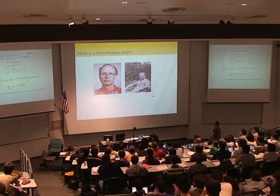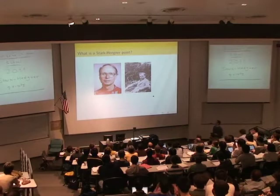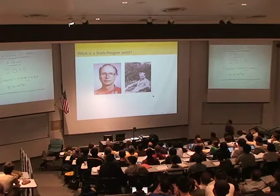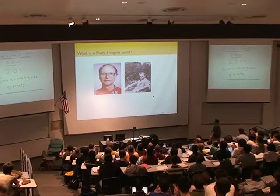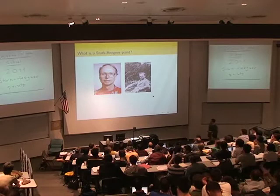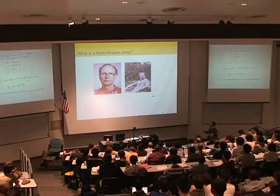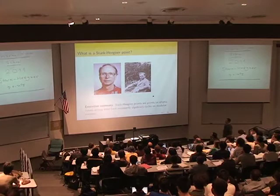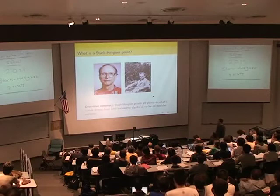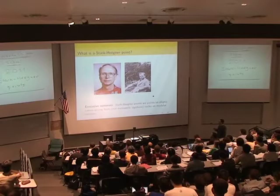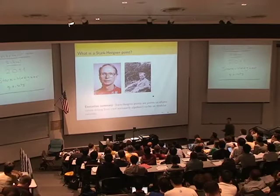What is a Stark-Heegner point? We don't really have a precise mathematical definition, but I can give a rough informal idea. For us, a Stark-Heegner point is any point on an elliptic curve which arises from cycles on some kind of modular variety, where the cycles are not necessarily algebraic. That is perhaps the key feature of the construction: we do not insist on working with algebraic cycles.